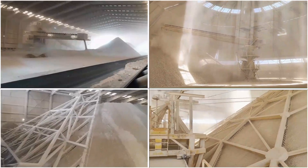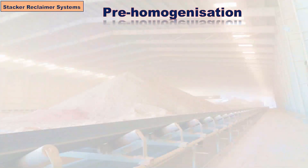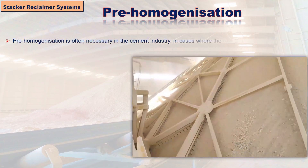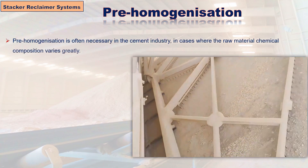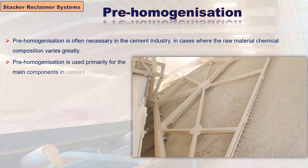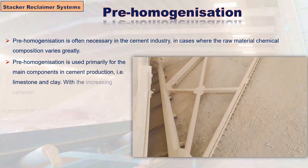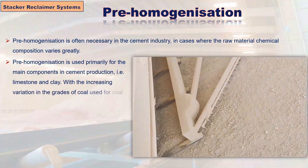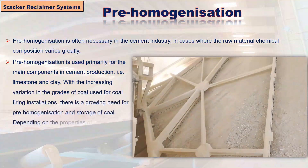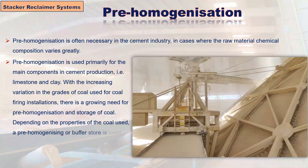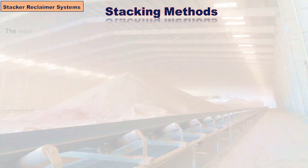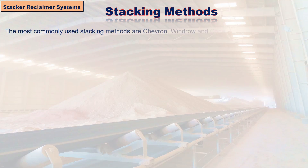The quantity to be stored is determined by the stocks to be maintained in number of days consumption. Pre-homogenization is often necessary in the cement industry in cases where the raw material chemical composition varies greatly. It is used primarily for the main components in cement production — limestone and clay. With increasing variation in grades of coal used, there is a growing need for pre-homogenization and storage of coal.